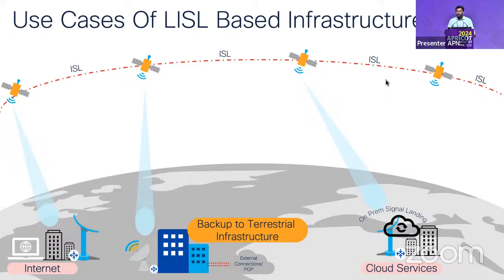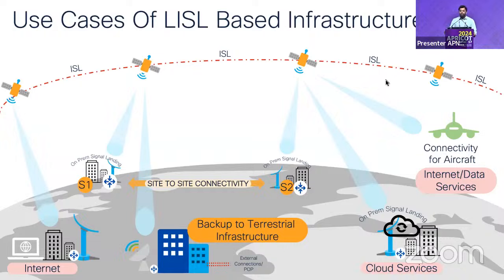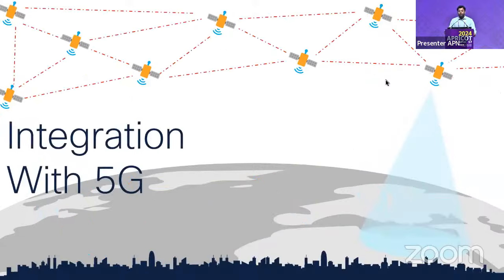We can have connectivity to aircraft — currently very limited given cost, but becoming more accessible. Cost has come down significantly. We can also have site-to-site connectivity for enterprise locations — remote sites, offshore mining, or areas not covered by terrestrial networks — using satellite links.